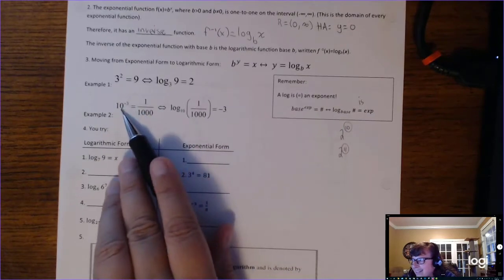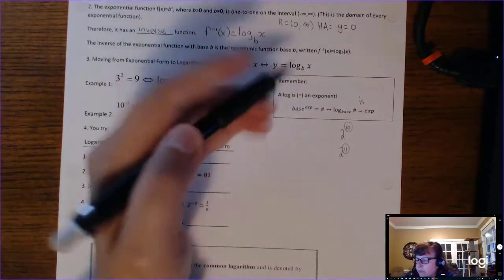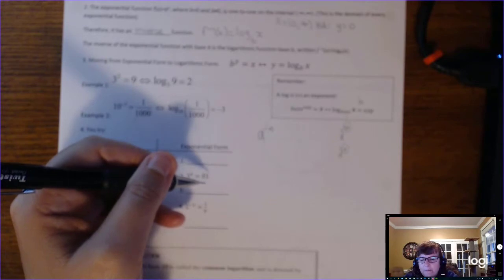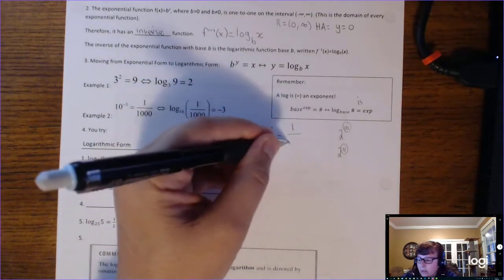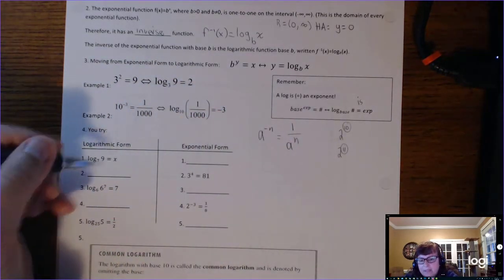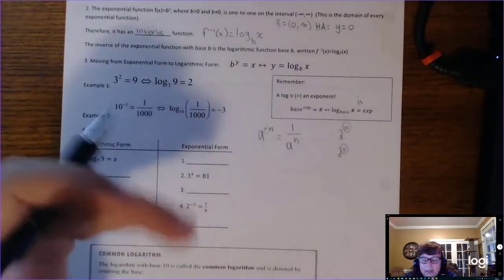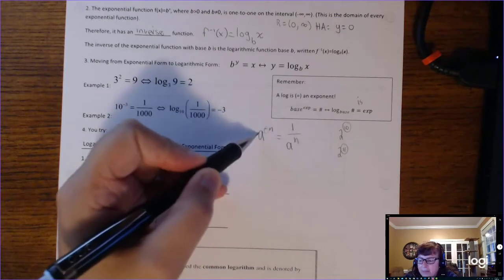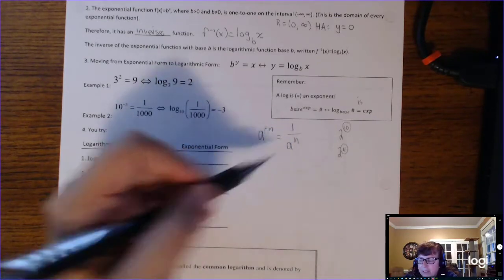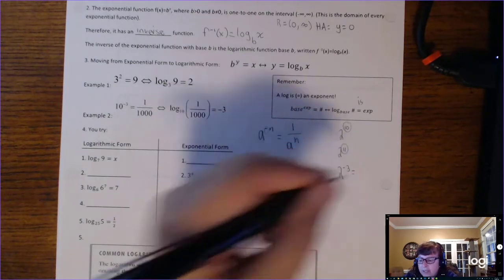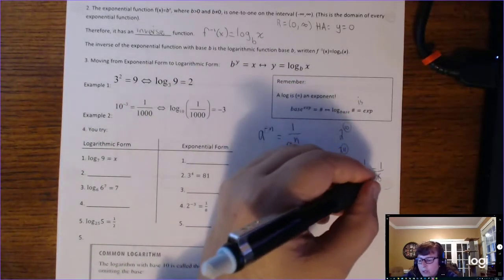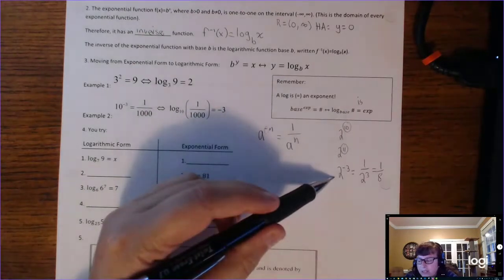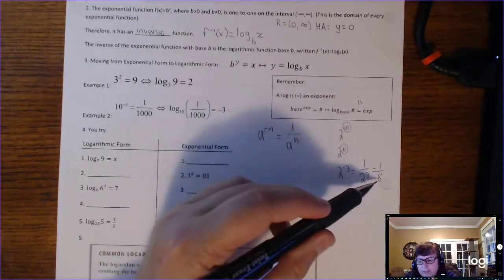This next example has a negative exponent, so let's do a quick review. A to the negative n does not give you a negative number. Negative exponents are used to write small numbers. A to the negative n equals 1 over a to the positive n. A negative exponent says: flip me and make me positive. So 2 to the negative 3 is 1 over 2 to the third, which is 1 eighth — not a negative number, just a small number.